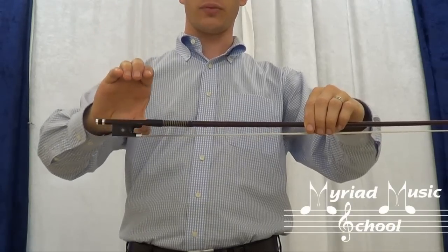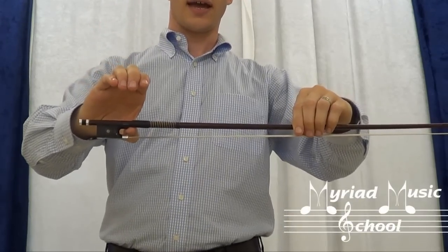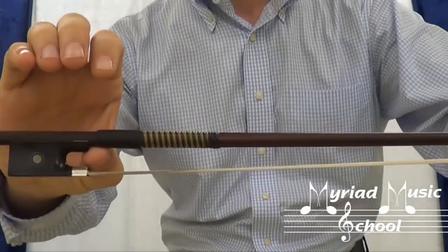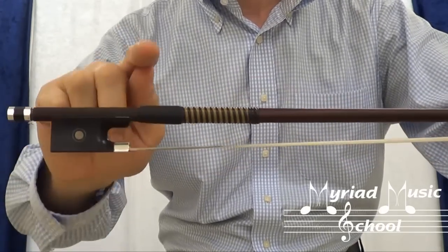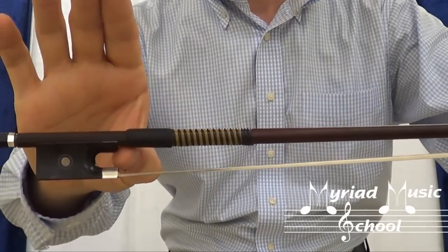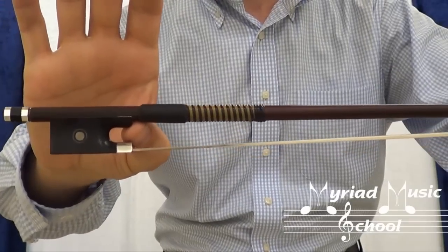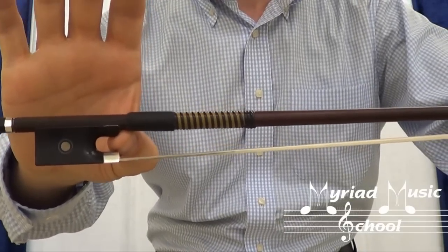Take your thumb of the letter C, which is bent, and put it between the frog and the grip, making a bridge. The very tip of your thumb should be touching the bow.